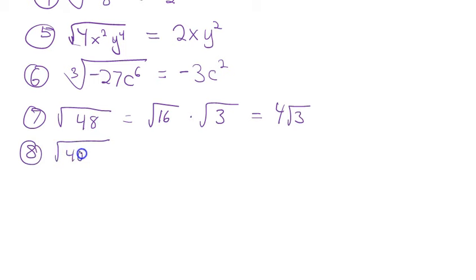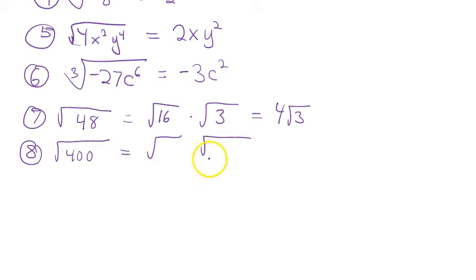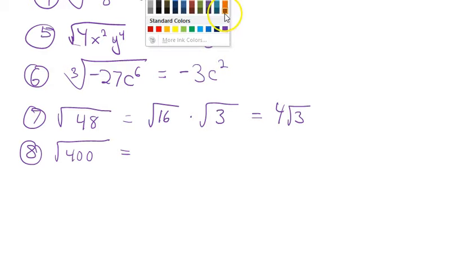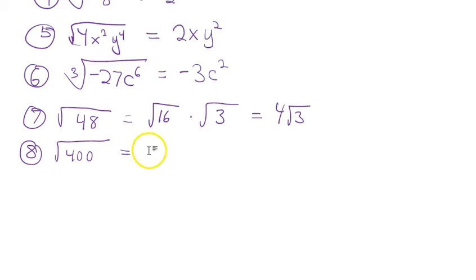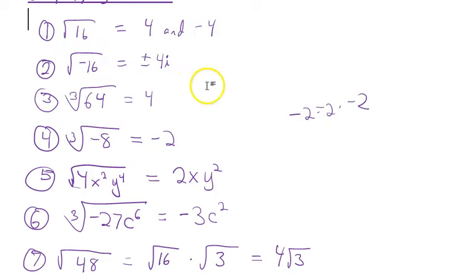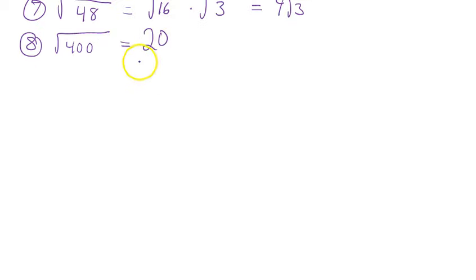Another example: the square root of 400. Set up two square roots and decide what to multiply. In this case, 400 is itself a perfect square, so the square root of 400 is simply 20.